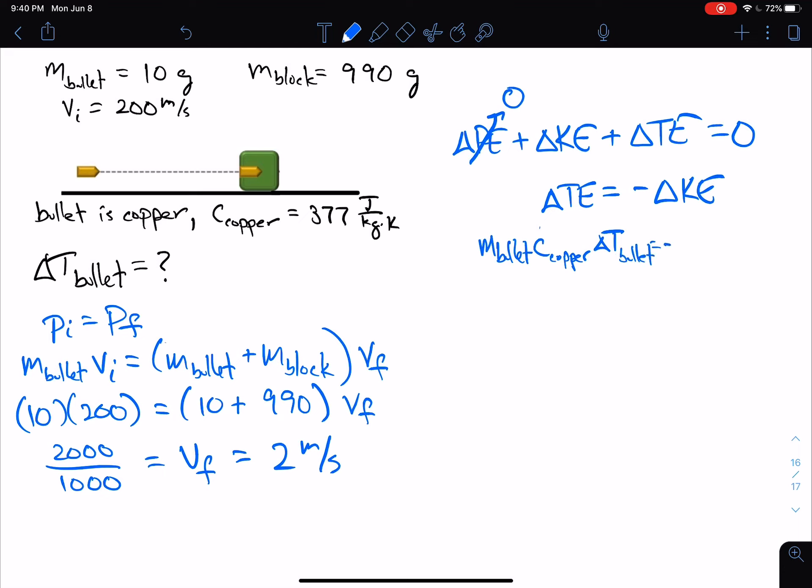That's going to equal the negative change. So this is the final kinetic energy minus the initial kinetic energy, because change is always final minus initial. The mass of the bullet—before, I didn't change the mass to kilograms, because I left this in grams and I knew I was going to divide it, so it didn't matter. That was going to cancel out.